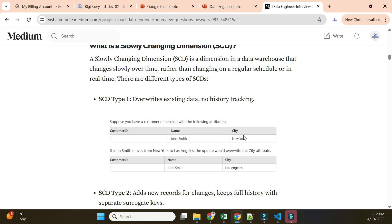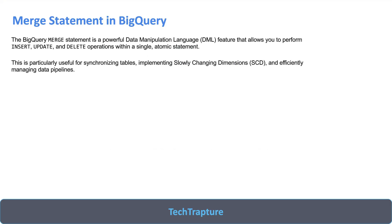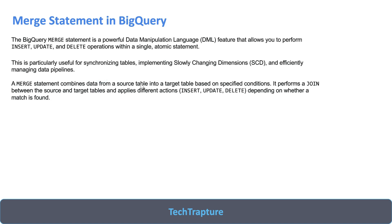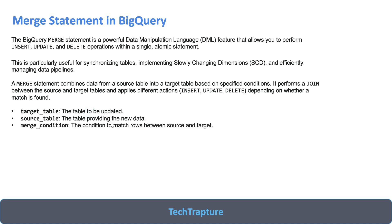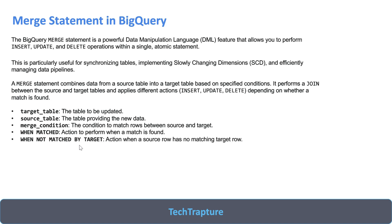The MERGE statement is typically used for SCD Type 1, where we compare the latest data to old data and update accordingly. Coming back to the main topic, MERGE is used for implementing SCD and efficiently managing data pipelines. It combines data from a source table into a target table based on specified conditions: WHEN MATCHED, WHEN NOT MATCHED BY TARGET, and WHEN NOT MATCHED BY SOURCE.